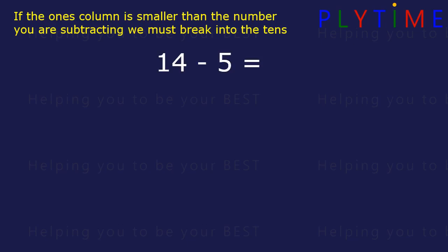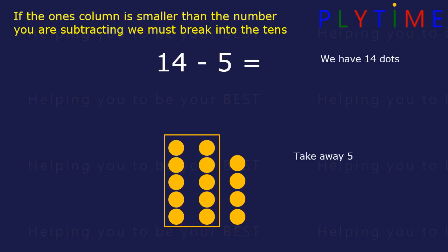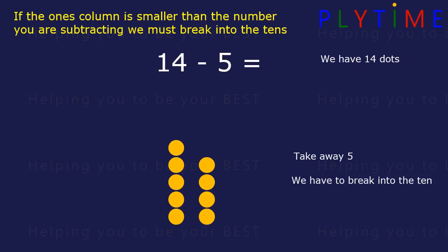Fourteen minus five. Fourteen is one ten and four ones. And now we're taking away five — one, two, three, four, and we need to break into a ten to take away the fifth. We're left with nine. Fourteen minus five equals nine.